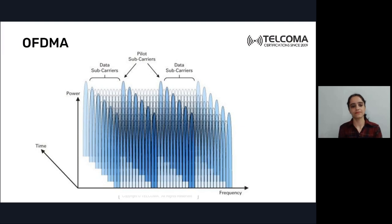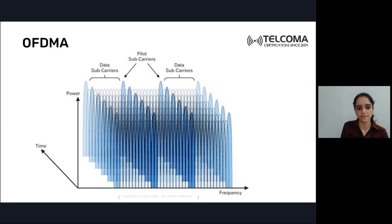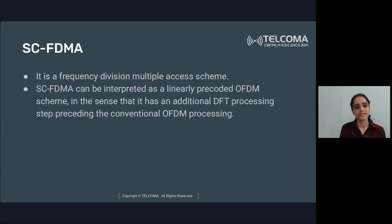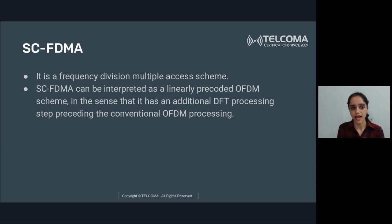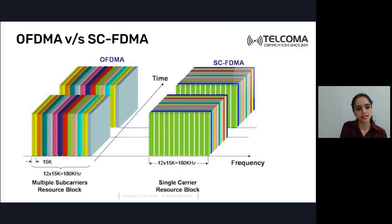OFDMA is used for the downlink in LTE, while SC-FDMA — single carrier frequency division multiple access — is used for the uplink. This is to reduce the PAPR, peak to average power ratio. One carrier is divided into sub-carriers of 15 kHz each, with 12 sub-carriers per resource block equaling 180 kHz, compared to multiple sub-carrier resource blocks in OFDMA.